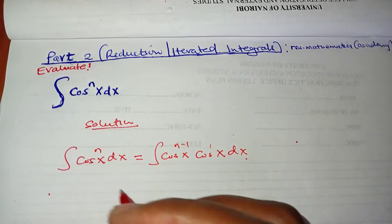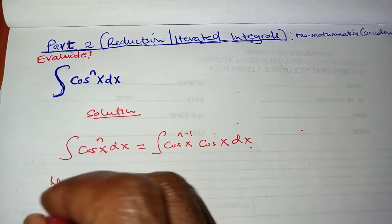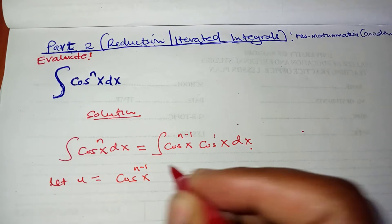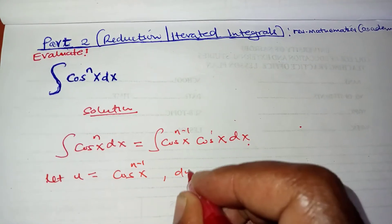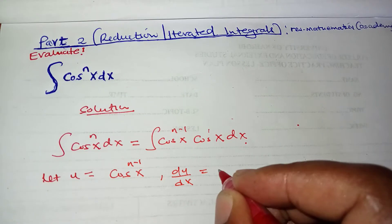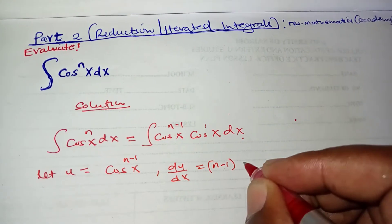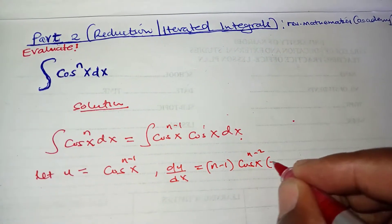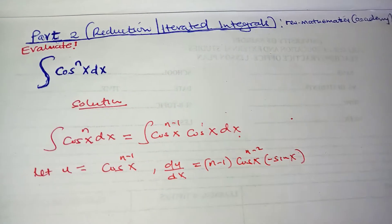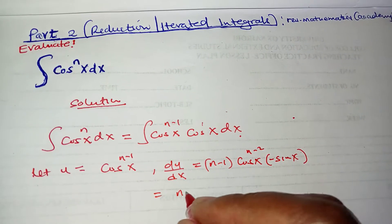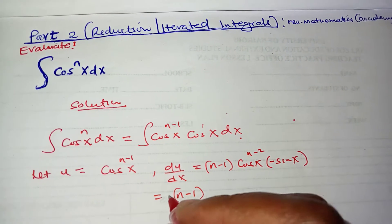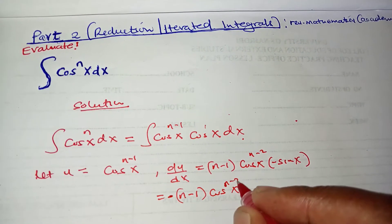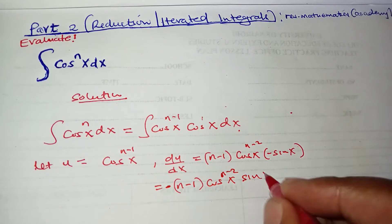We're going to use integration by parts here. We let u equal cosine of x to the power of n minus 1. We perform the derivative of u with respect to x and we get n minus 1 times cosine of x to the n minus 2. Then when you differentiate, you get minus sine of x, so du/dx equals negative (n minus 1) cosine of x to the n minus 2 times sine of x.